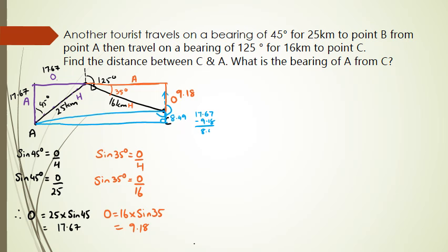Now I need to work out what the adjacent side is for the orange triangle, so I'm going to be using cos. I've got cos 35 equals adjacent over hypotenuse, cos 35 equals adjacent over 16, so adjacent is 16 times cos 35, which equals 13.10.